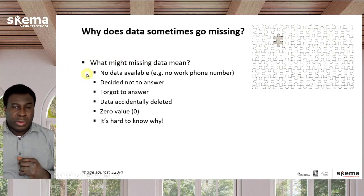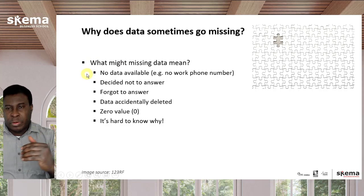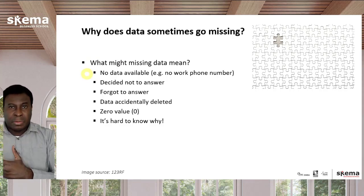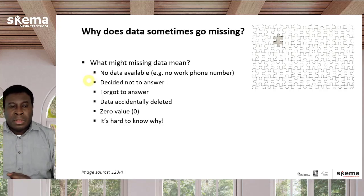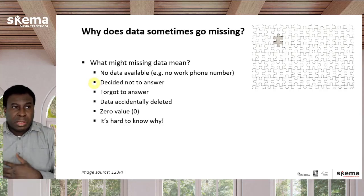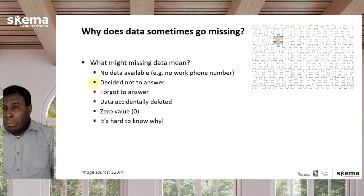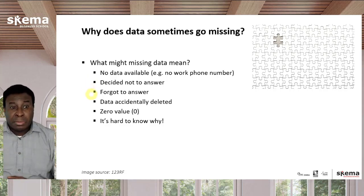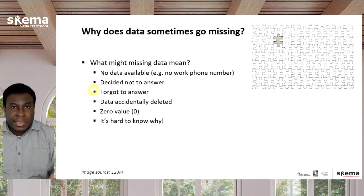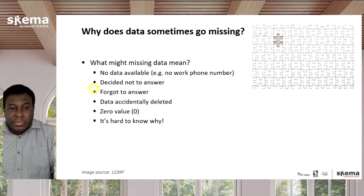For instance, you're collecting phone numbers and asking for a mobile phone number and a home phone number, but some people don't have a home phone — they only use a mobile phone, so they leave it blank. Sometimes people decide not to answer; maybe they don't want to mention their city, so it's blank for that reason. Sometimes you have a long survey and they skip over a question accidentally — they just forgot to answer.